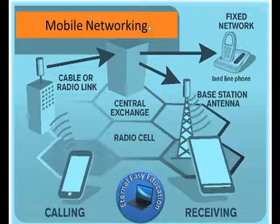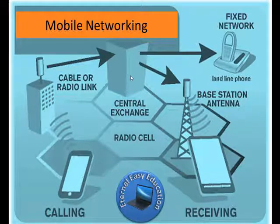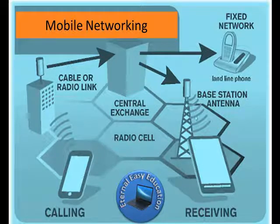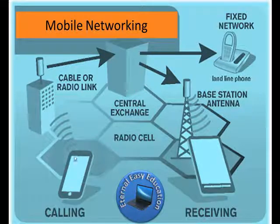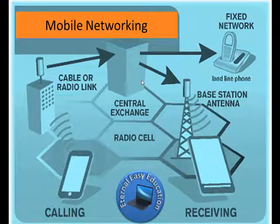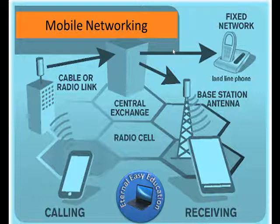In mobile networking, the person calling converts voice to radio signal waves and it is given to the central exchange tower. Then it is passed to the base station within that cell — the area where the receiving person is located — and given to the receiving person. It can also be connected to a landline number. Within three cells, a base station will be there, after which it is given to the central exchange, which is the switching place where signals are received and passed on.